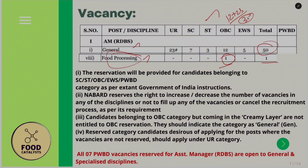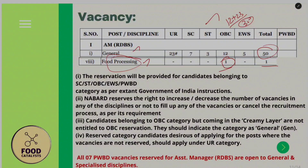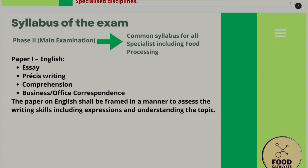An important note on OBC: you must be in the non-creamy layer to apply under the OBC category; otherwise you fall under the general category. There are also 7 extra vacancies for PwD candidates open to all specializations. If you are a food processing candidate with PwD status, this PwD vacancy is separate from the one food processing OBC seat — the 7 PwD vacancies are distributed across all categories.